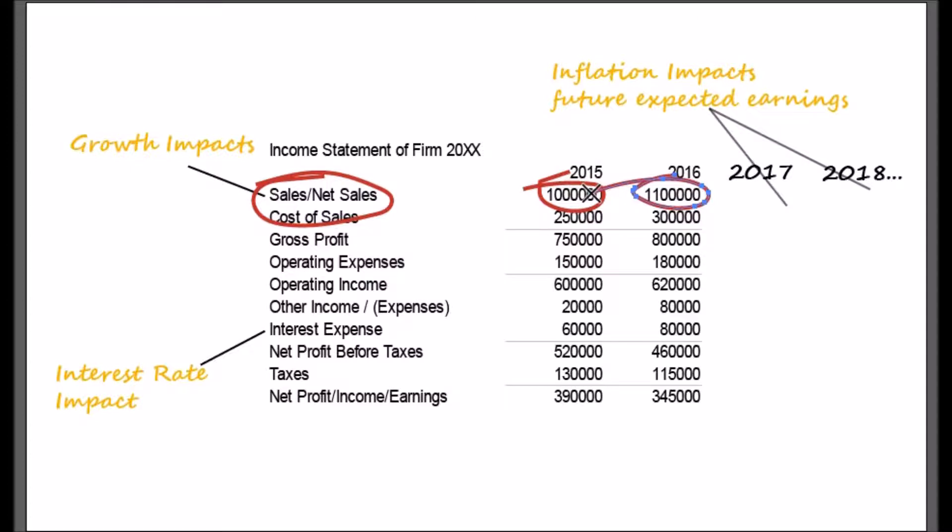Let's look at the second macroeconomic factor: inflation and its relationship with stock prices. High inflation is a negative for the stock market. This is because inflation reduces the real value of future corporate earnings and dividends. We will see in detail what real and nominal means in the gross domestic product chapter, but for now we simply need to know.